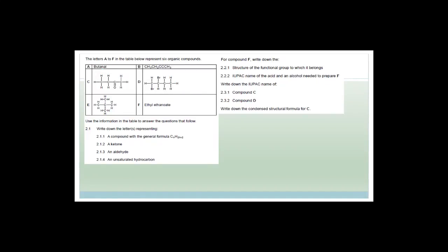Looking at compound B: CH₃, CH₂, then C=C, CH₃ — there's definitely a double bond, so it's an alkene or alkyne. Compound with a double-bonded O not at the end and not in the middle is a ketone. We've got a haloalkane because there are bromines on an alkane — counting the carbons gives five, so it's a branched alkane. Ethyl ethanoate is obviously an ester.